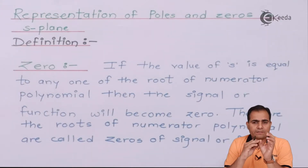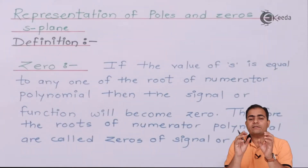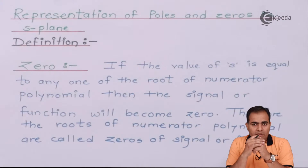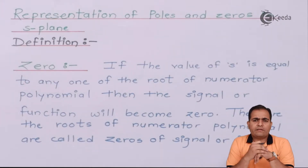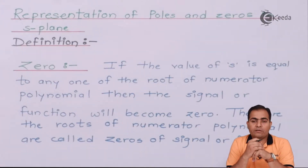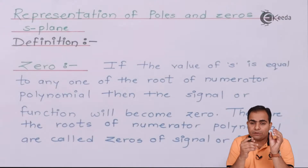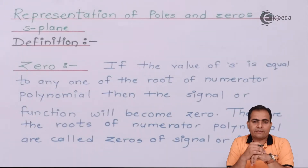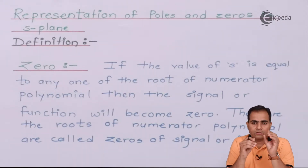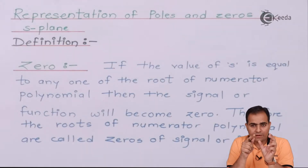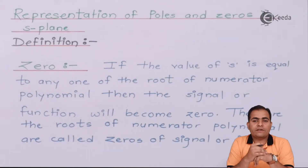Suppose we have two brackets: (s + 5) and (s + 2). Equate s + 5 = 0, and you get s = −5. Now substitute s = −5 back into (s + 5): −5 + 5 = 0, so that bracket becomes 0.